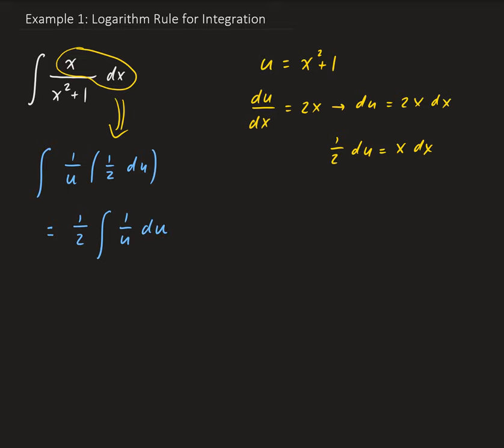So the integral of 1 over u du is going to be the natural log of u. So we have 1 half times the natural log. We take the absolute value of u because we're assuming that we're only working with real values.